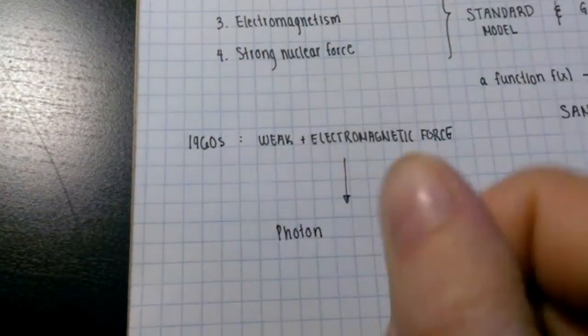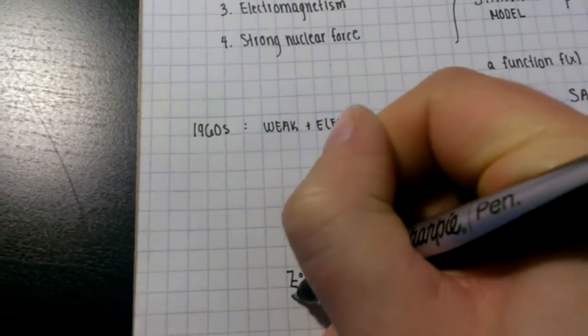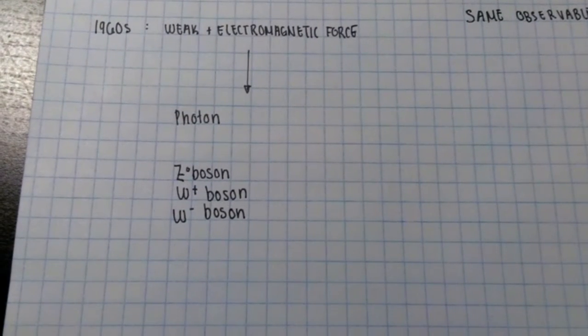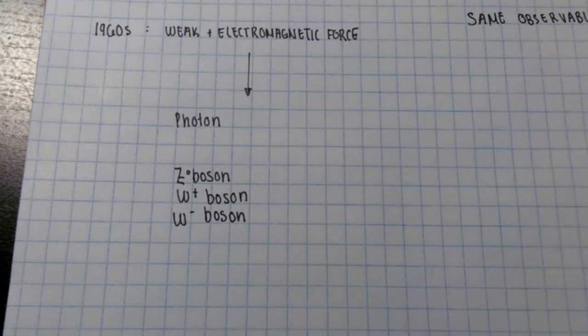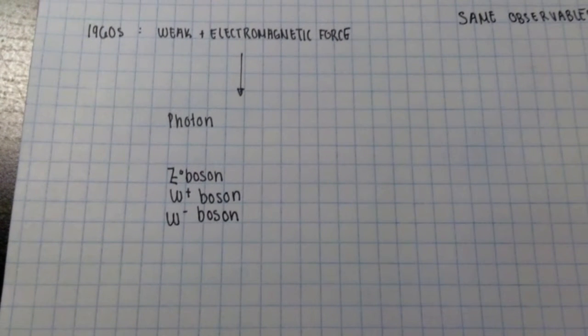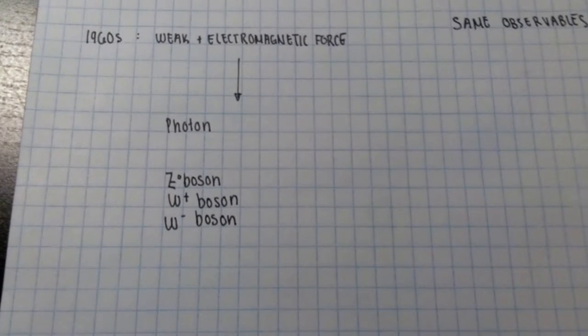Their theory included four particles: the photon, the Z0 boson, and the W plus and W minus bosons. The photon takes part in the electromagnetic interaction, while the Z0 and the two W bosons participate in the weak interaction.